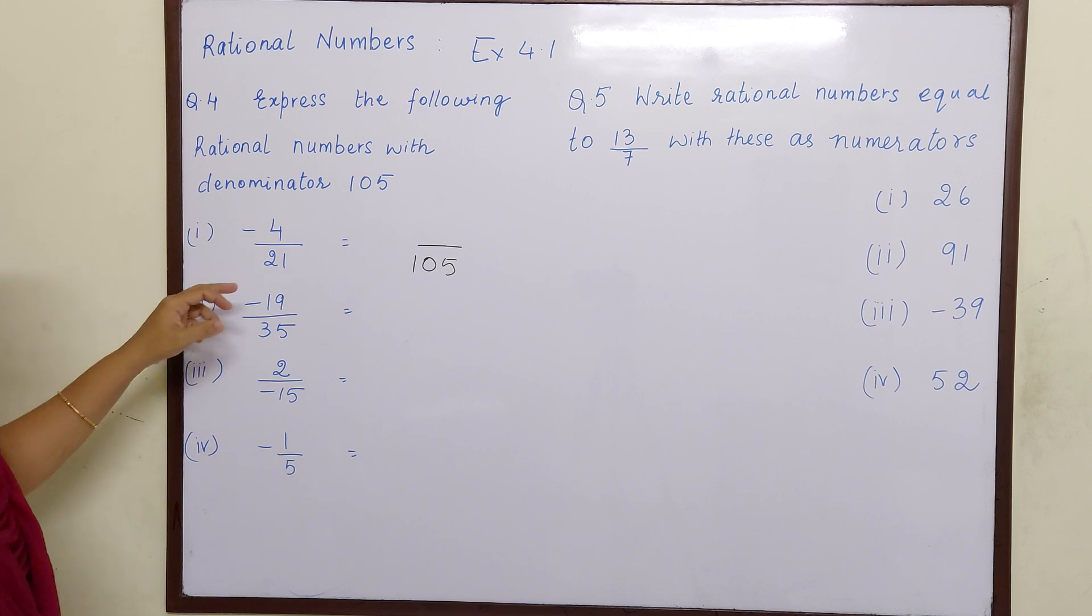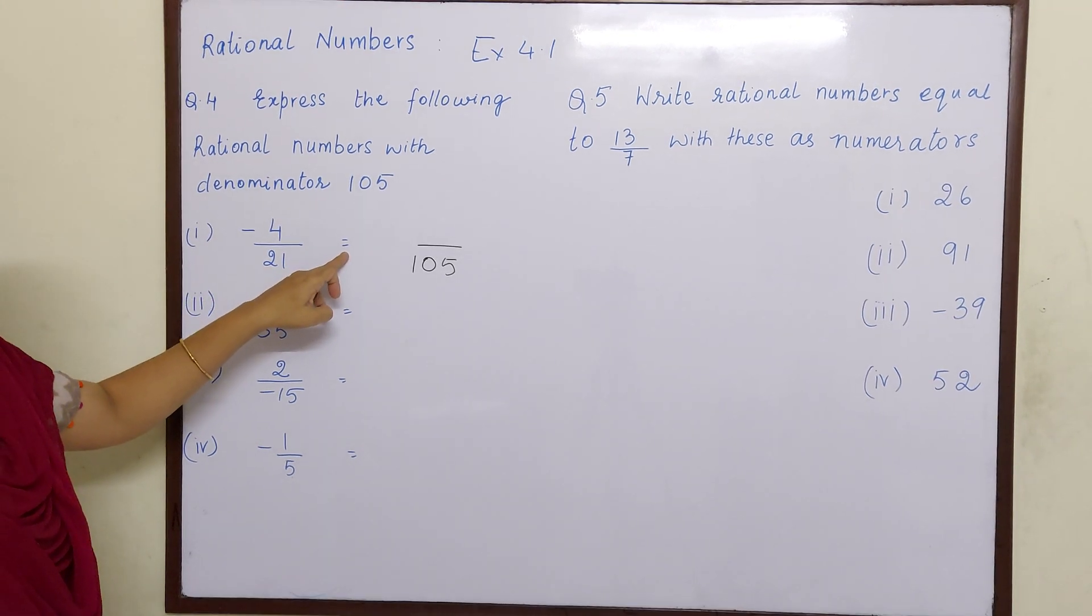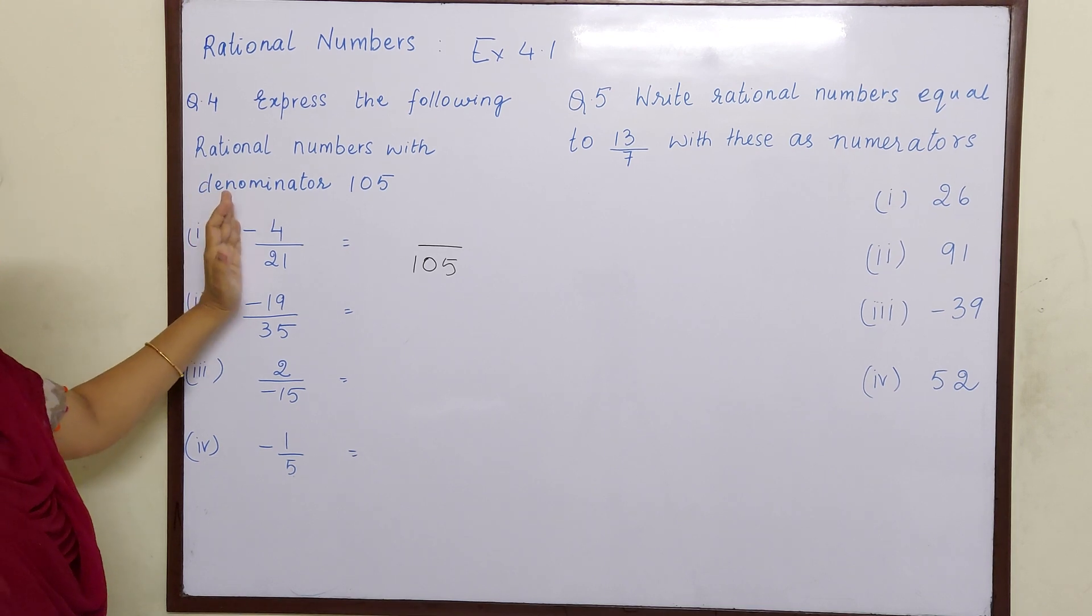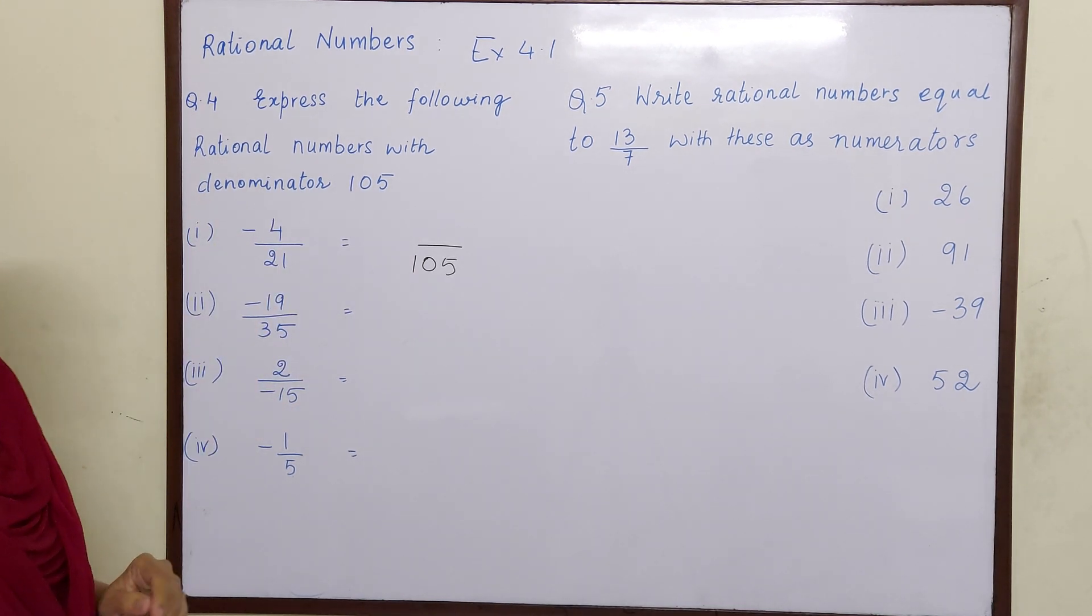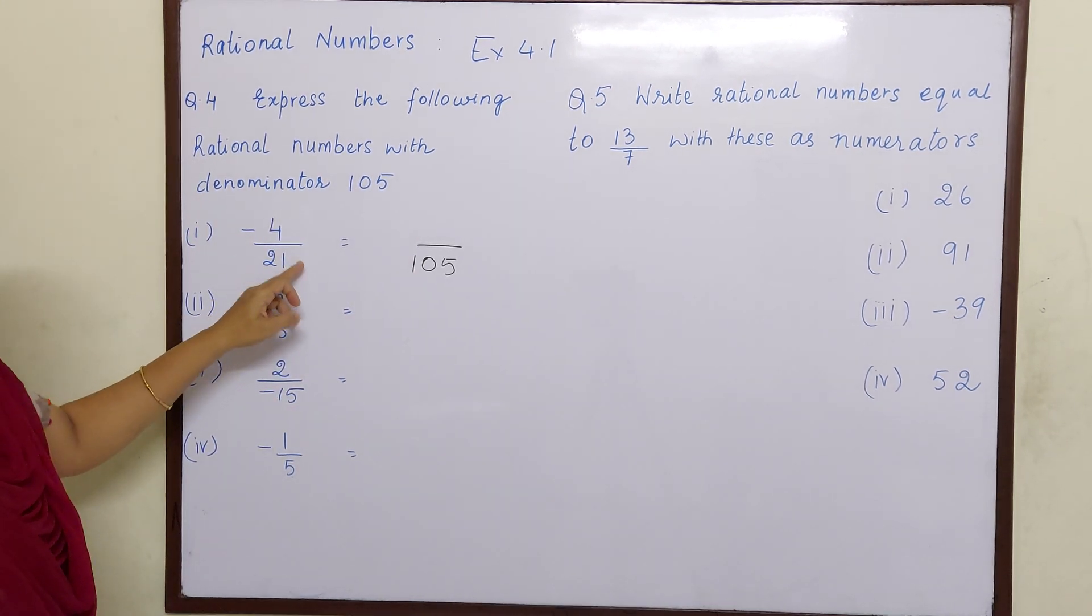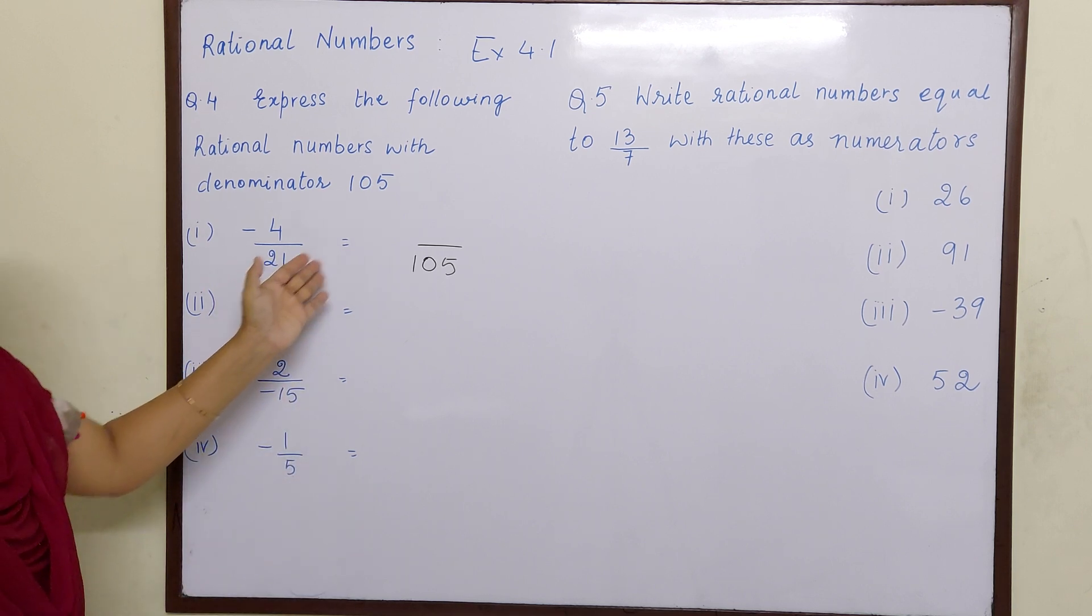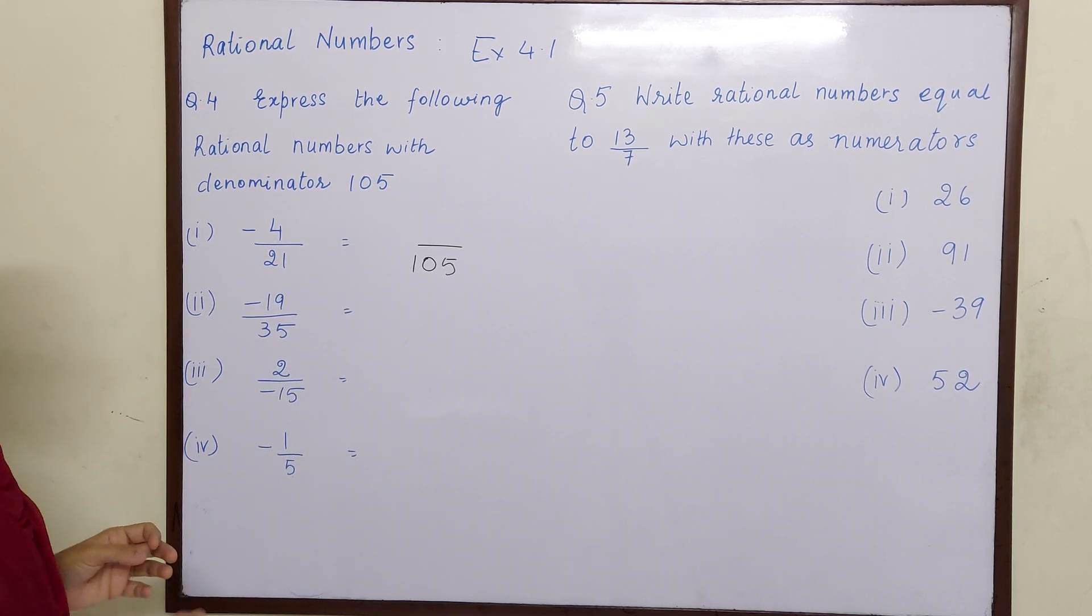So you can see that this equal sign, that means you have to convert this into an equivalent fraction. That means whatever number you multiply here in the denominator, the same number has to be multiplied in the numerator. Then only this will become an equivalent fraction.